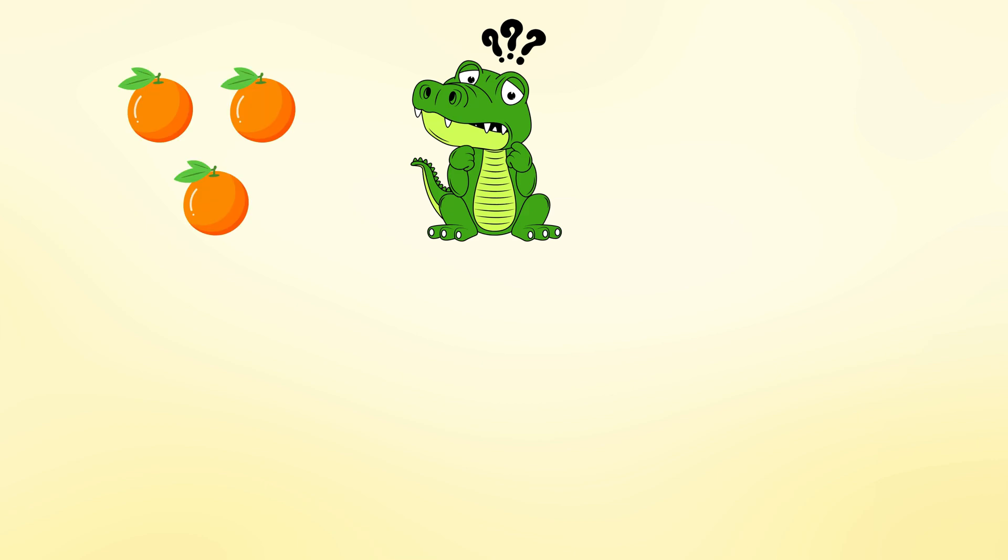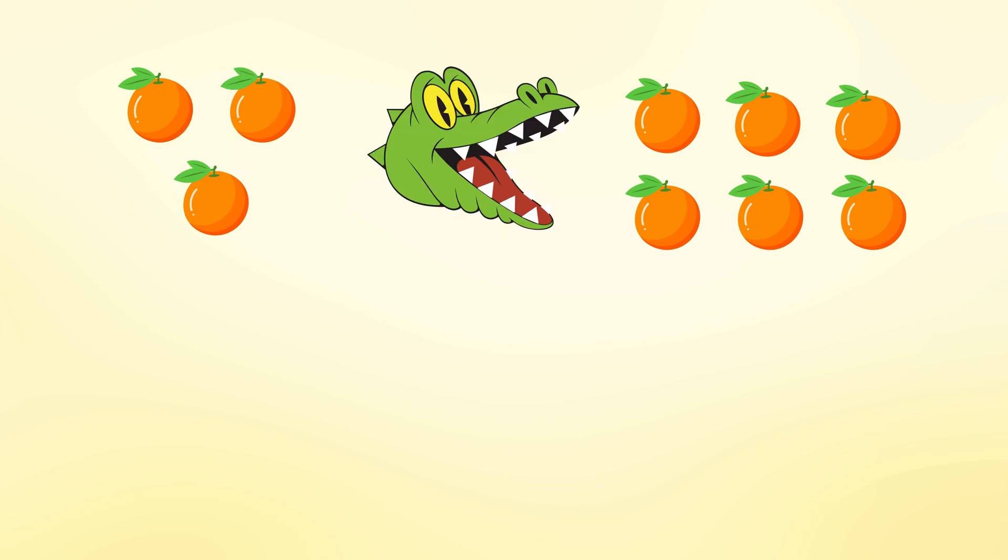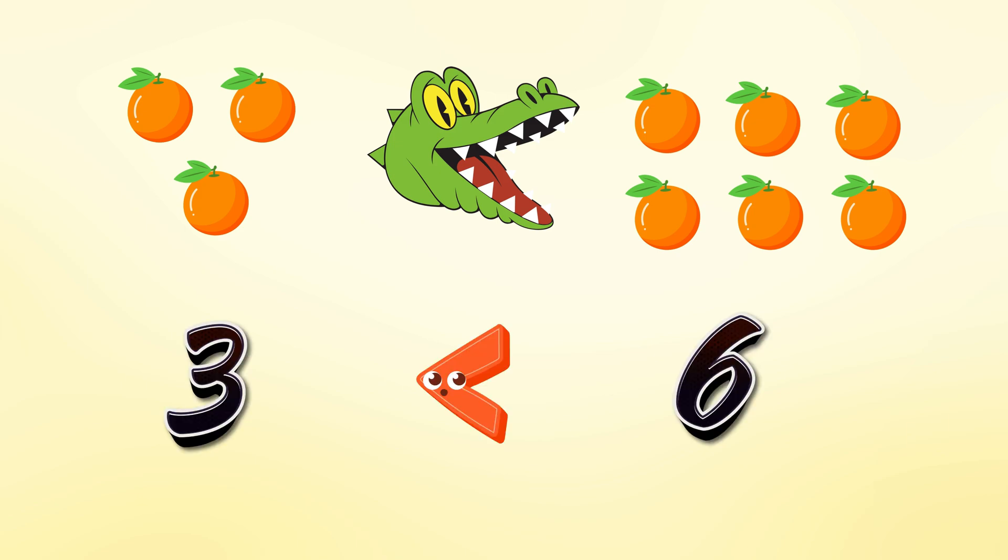We have one box with three oranges. And another box with six oranges. So, which box will the crocodile eat? Of course, it won't eat the box with fewer oranges. The crocodile only eats the larger portion. So, 3 is less than 6.